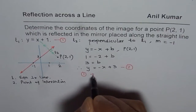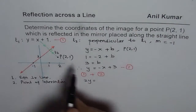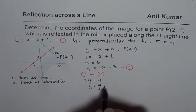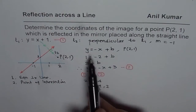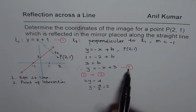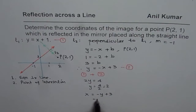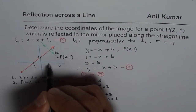We will just add these two equations. When you add them, you get 2y equals 0 plus 4, so y equals 4 over 2, which is 2. Once we know y is 2, we can substitute to find x using equation 2: x equals minus y plus 3, so x equals minus 2 plus 3, which is 1. We get the coordinates of the point of intersection as (1, 2).